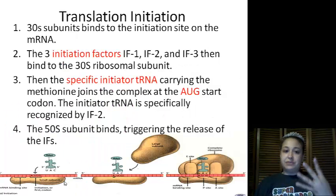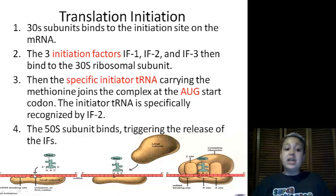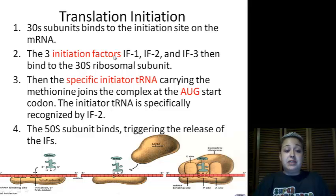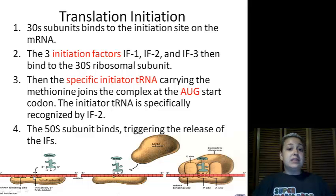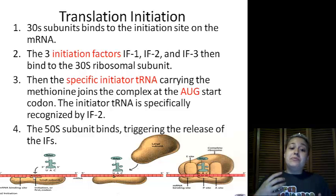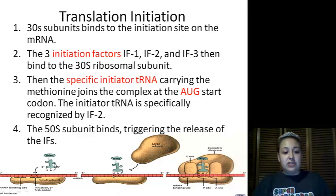Translation initiation happens in four steps. First, the 30S subunit binds to the initiation site — it recognizes a site just ahead of the start codon. Three initiation factors (IF1, IF2, and IF3) help bind the 30S subunit onto the mRNA. Next, the specific initiator tRNA brings in formyl methionine — just know it as methionine — and it binds to the start codon, AUG. Initiation factor 2 specifically helps bind that initiating tRNA to the start codon.